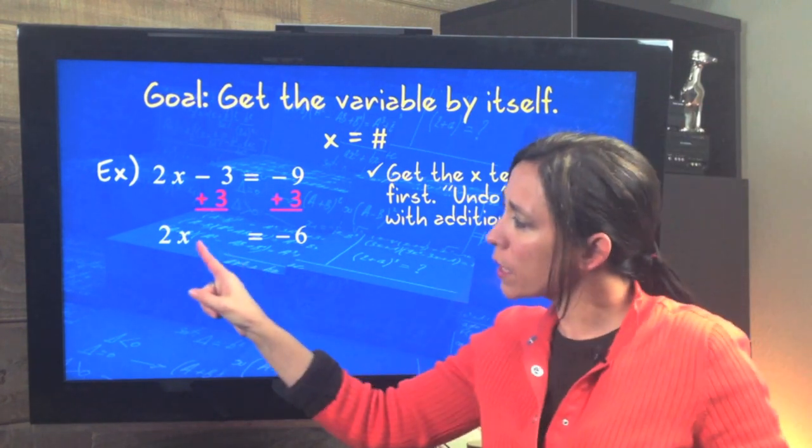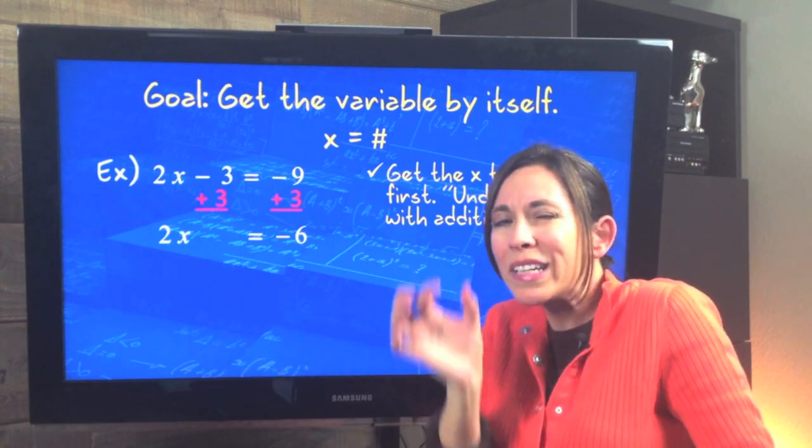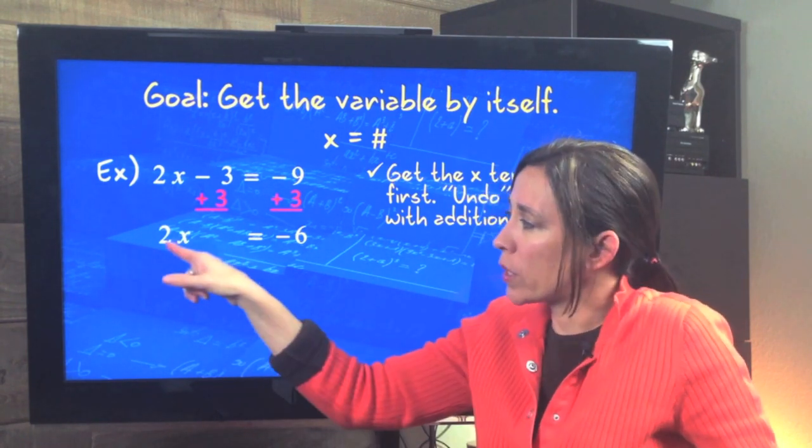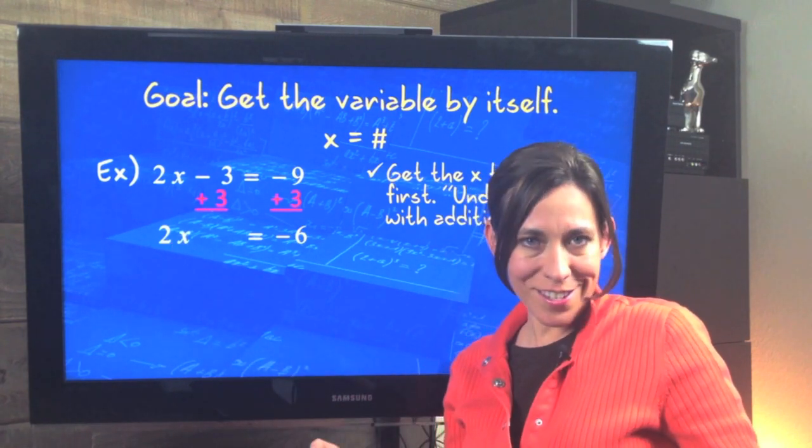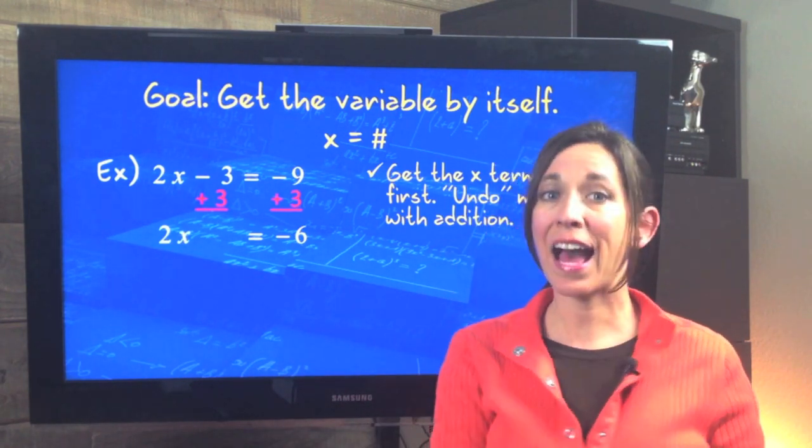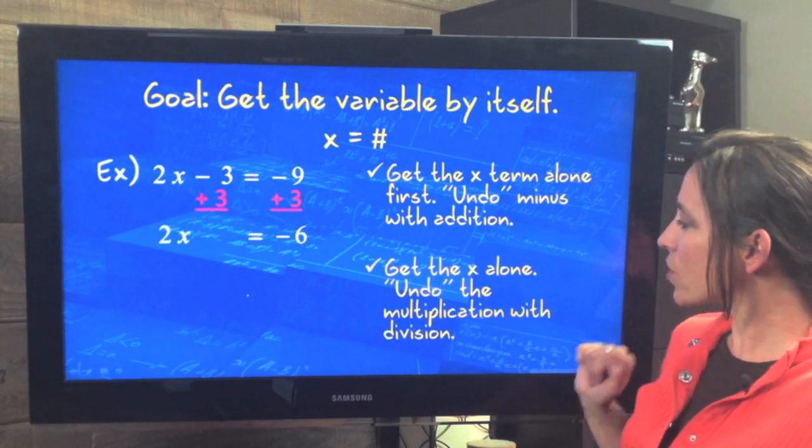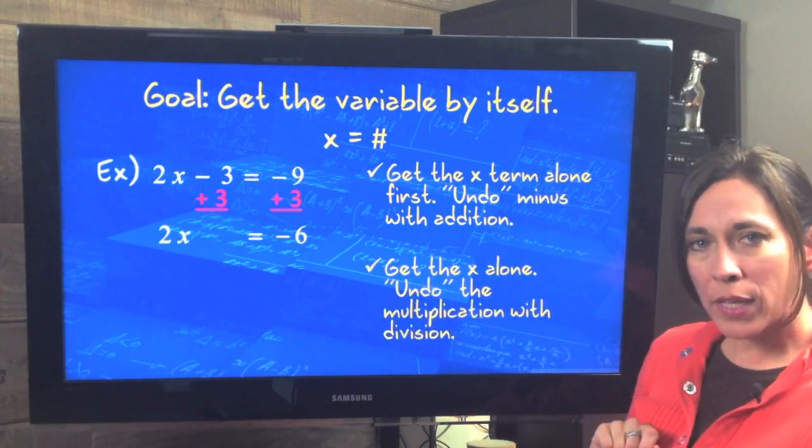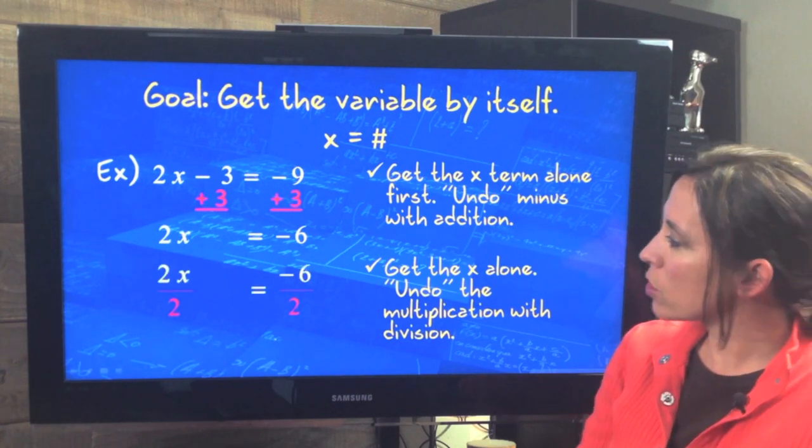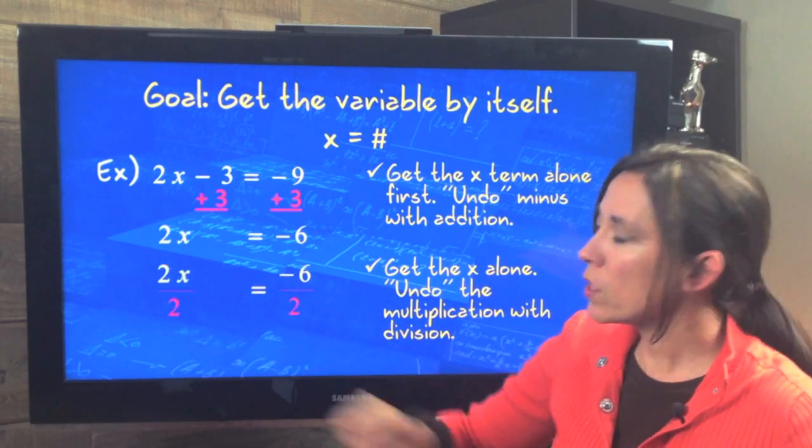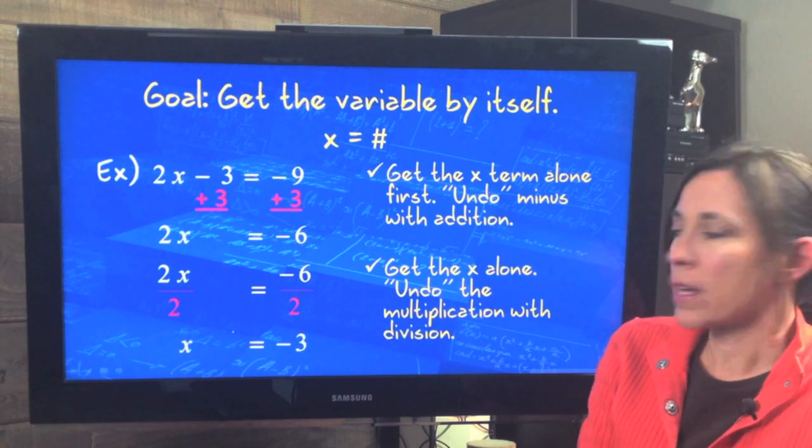Same problem here. We've got the term by itself, but I still have a 2. So now I want to whittle it down a little bit more and get rid of this 2. So what's that operation in between the 2 and the x? Multiplication. And how do we undo multiplication? Division. Good. So to get the x alone, we're going to undo the multiplication using division. So if we divide both sides by 2, 2 divided by 2 is 1, which is what we wanted. 1x equals negative 3. Yay!